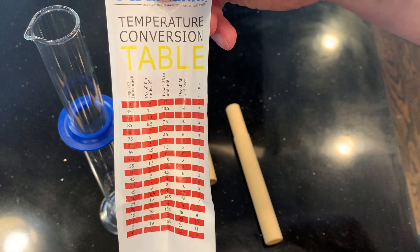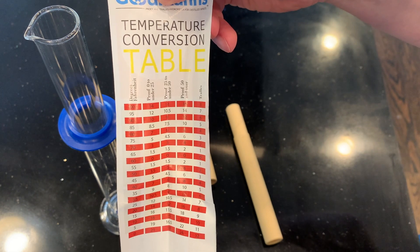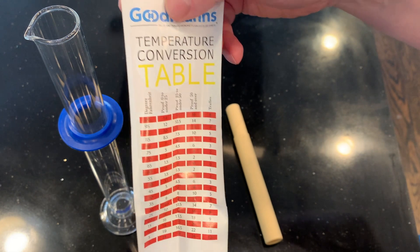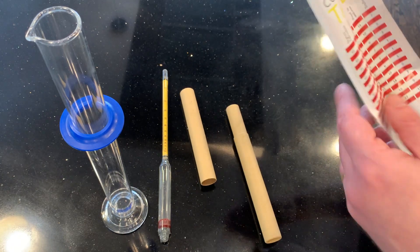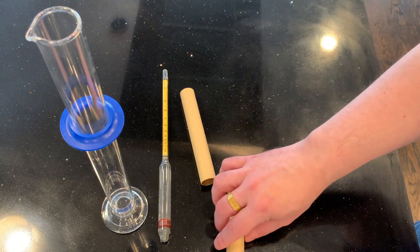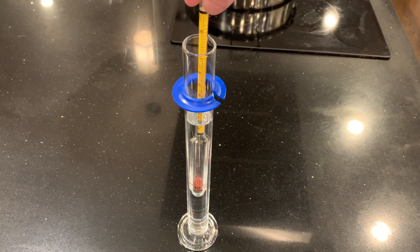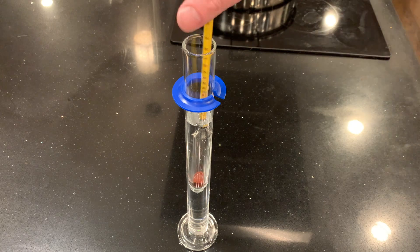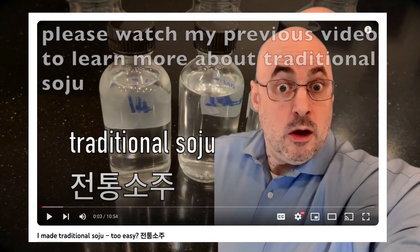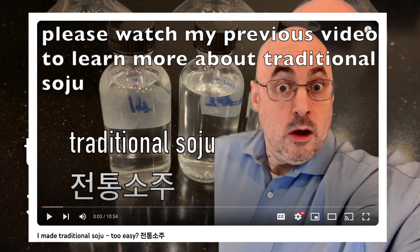Now I've had trouble making ABV measurements of fermented alcohol in the past, but I have high hopes today because I'll be measuring distilled liquid that is essentially just alcohol and water. So the situation should be simpler, and I expect to be able to get reasonably consistent and accurate measurements. And please watch my previous video to learn more about traditional soju.